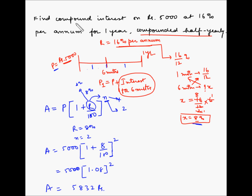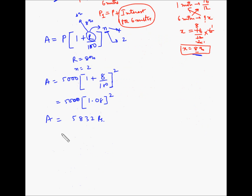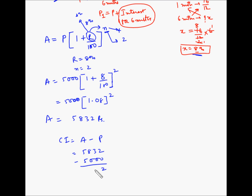However, we have to find the compound interest and not the amount. The compound interest will be equal to the amount minus the principal, which is 5832 minus 5000, so 832 rupees is the interest.